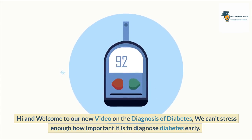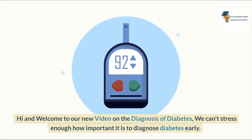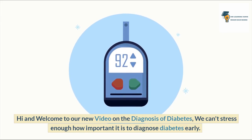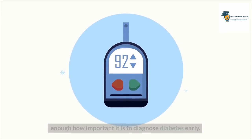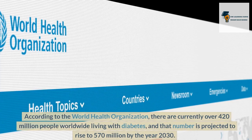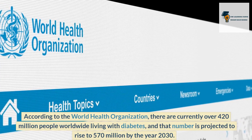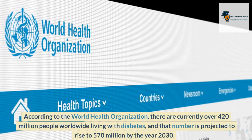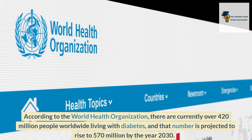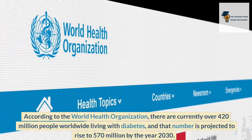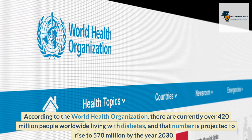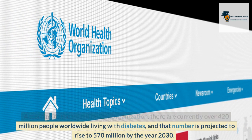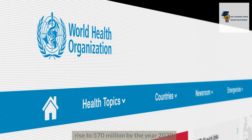Hi and welcome to our new video on the diagnosis of diabetes. We can't stress enough how important it is to diagnose diabetes early. According to the World Health Organization, there are currently over 420 million people worldwide living with diabetes, and that number is projected to rise to 570 million by the year 2030.